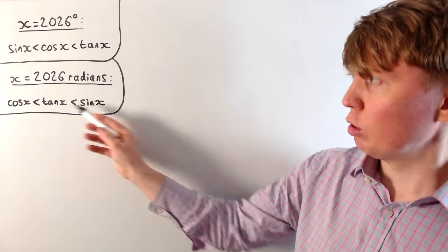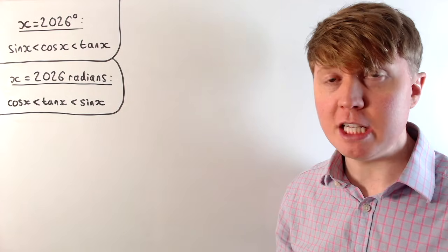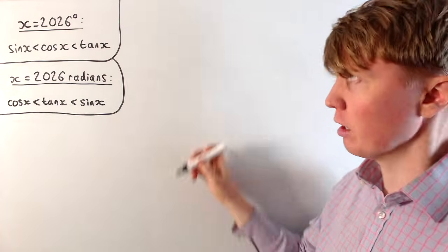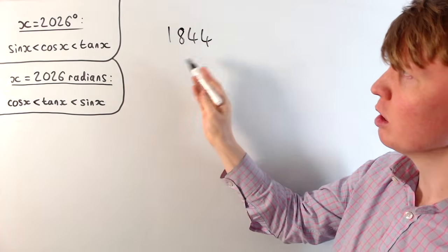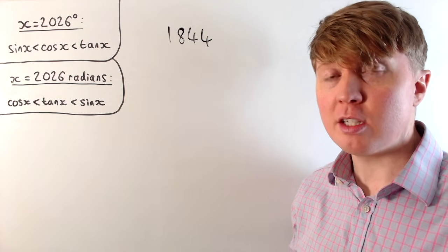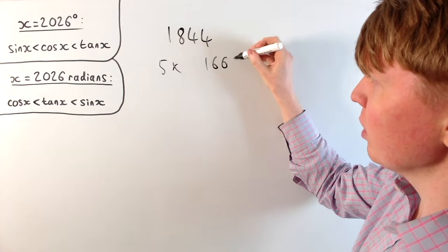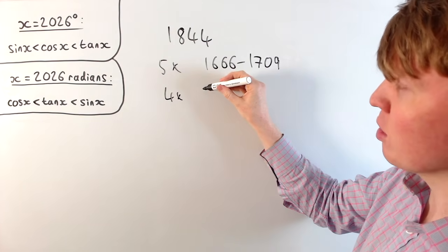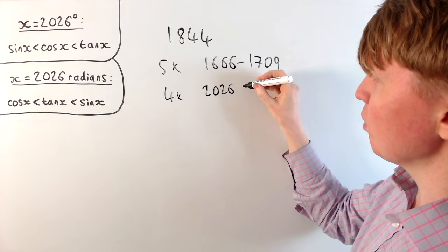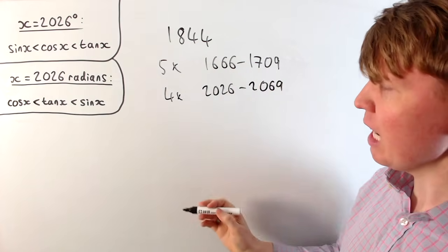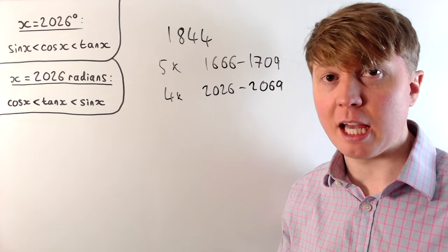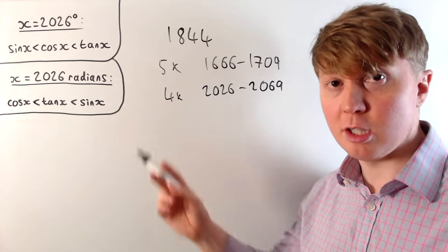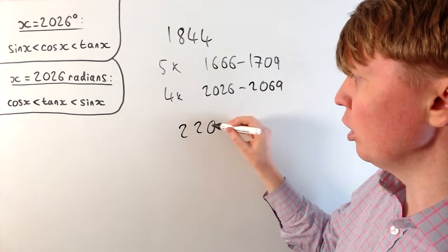So now we're going to be interested in not just when did this order last happen, but when did the order in radians and this specific order in degrees last happen together. The last time we had sine less than cos less than tan in degrees, and cos less than tan less than sine in radians is actually back in 1844. Then we also had this 5 times in this longer period from 1666 to 1709. The next time this happens, because the degrees are so slow to change, this won't happen again until 2202.